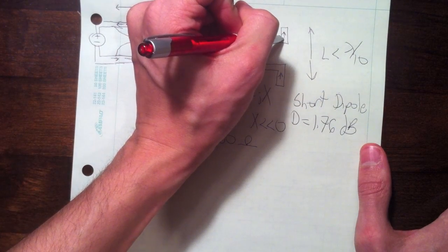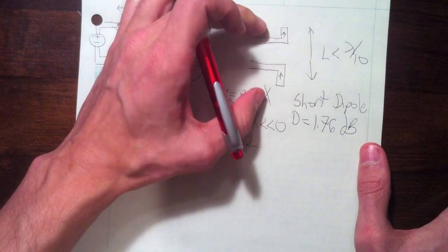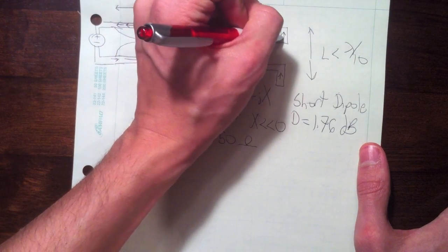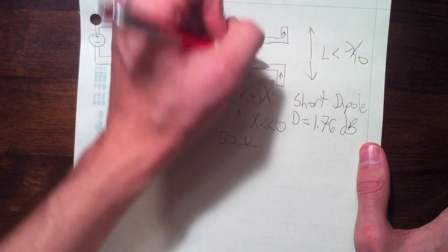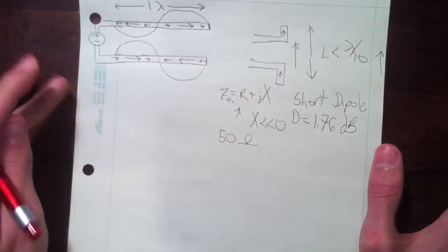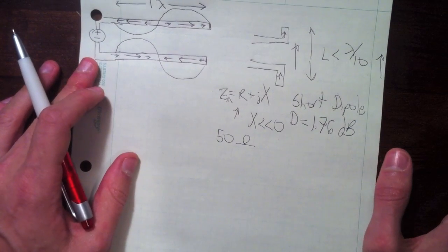But ultimately, the current is flowing in the same direction on either arm of this dipole antenna, and this is what gives rise to radiation. And the current here is adding in phase, and so ultimately the polarization is going to be in this direction. So we'll look at the radiation pattern in a minute.